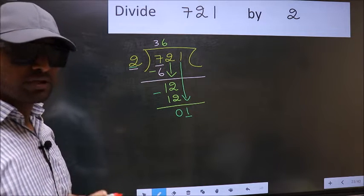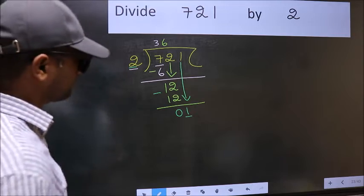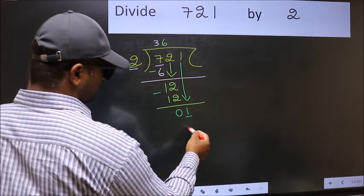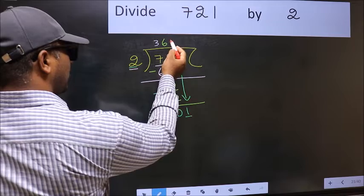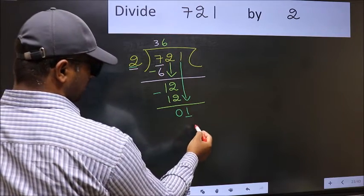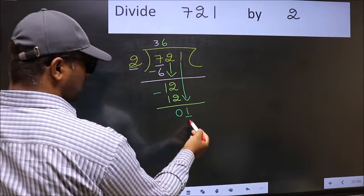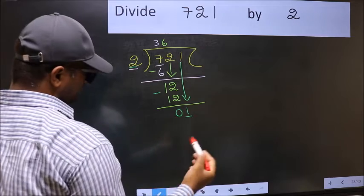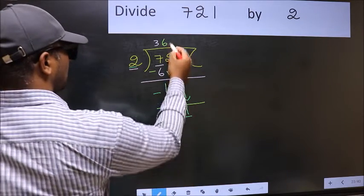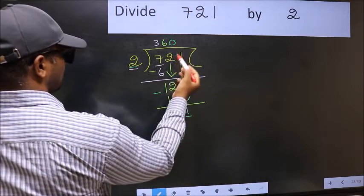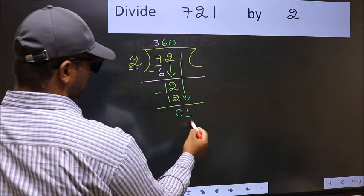Instead, what you should think of is, what number should we write here? If I take 1, I get 2 here. But, 2 is larger than 1. So, what we do is, we should take 0 here. So, 2 into 0, 0.